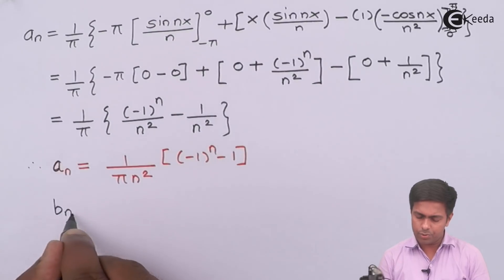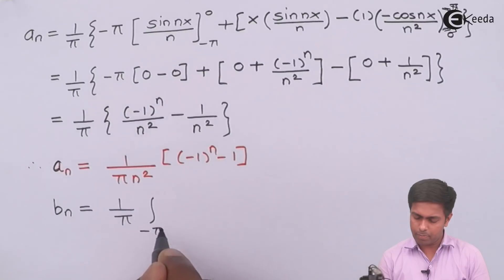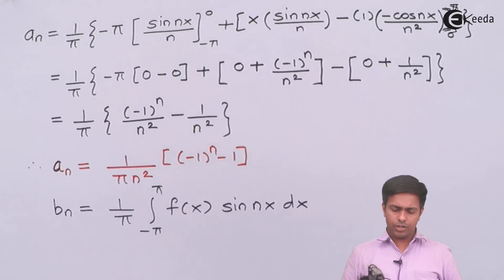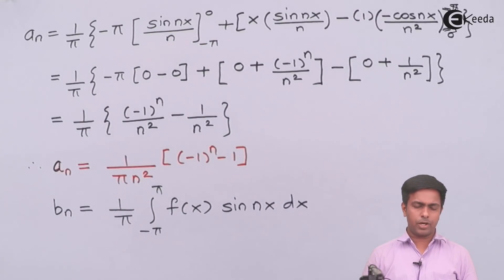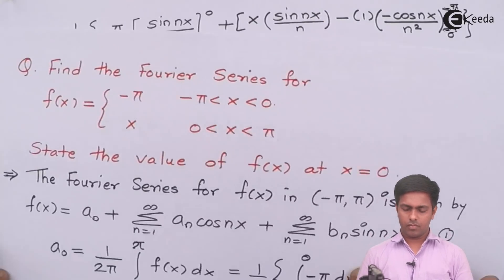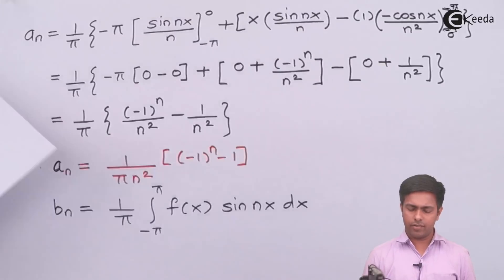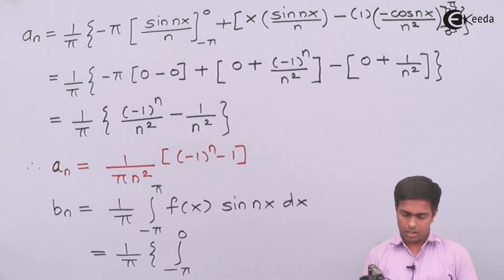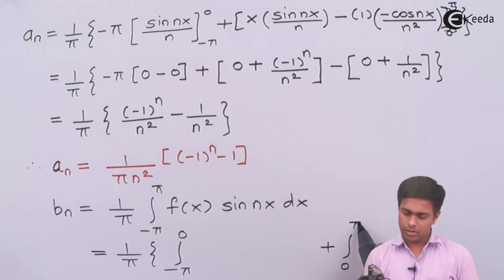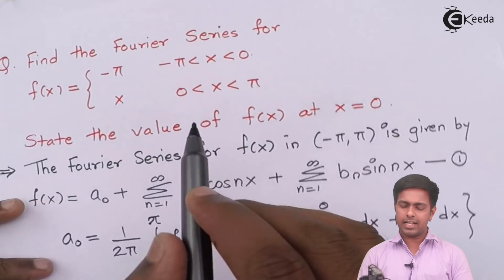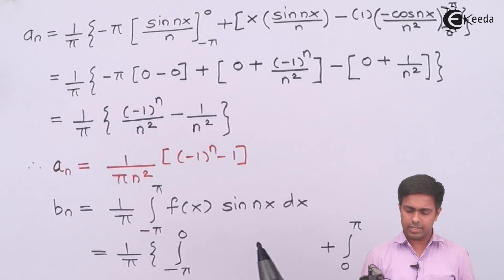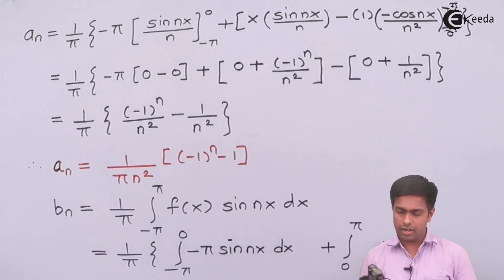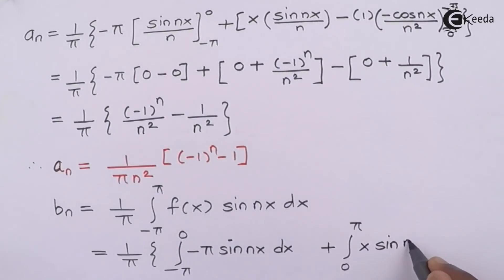Now let's find bₙ. The formula is 1 by pi, integration from minus pi to pi of f(x) sin(nx) dx. The range is divided into two parts, so this becomes: 1 by pi times [integral from minus pi to 0 of (minus pi) sin(nx) dx + integral from 0 to pi of x sin(nx) dx].